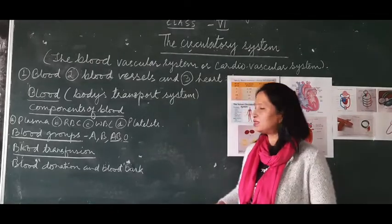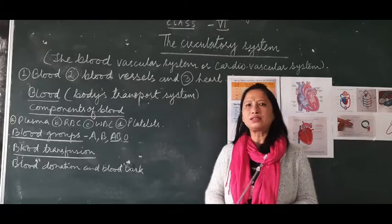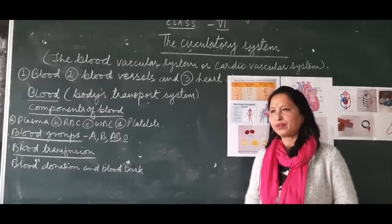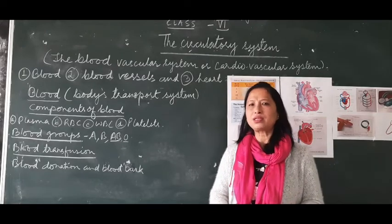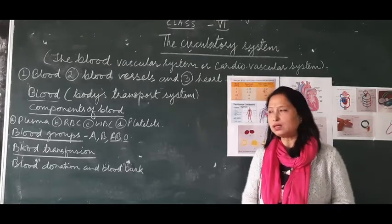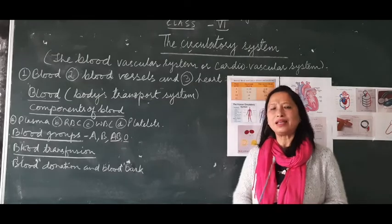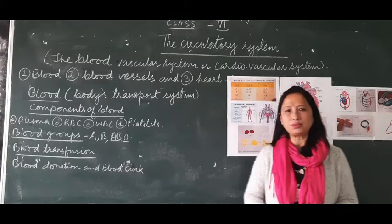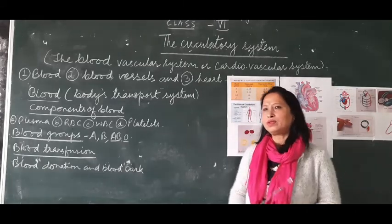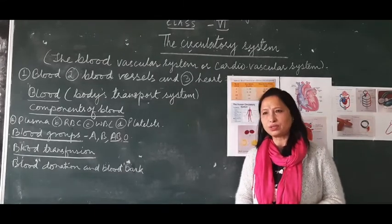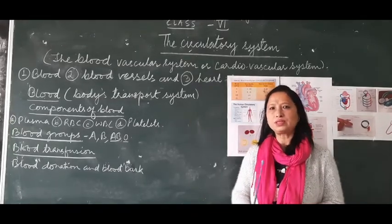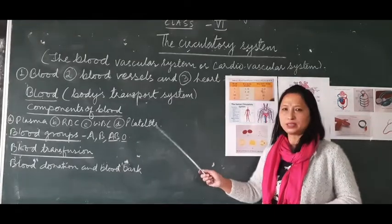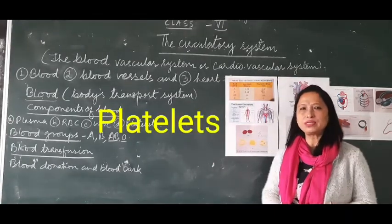WBC cells are colorless and larger than RBC. They do not have a definite shape but can change their shape like an amoeba. The number of WBC is less than that of RBC. The function of WBC is to defend our body from infection — it protects us from germs.